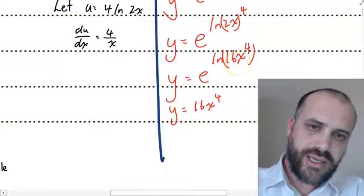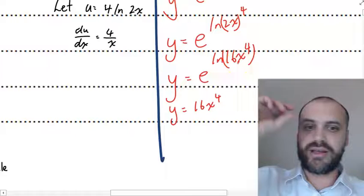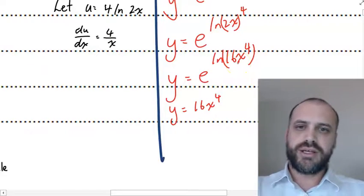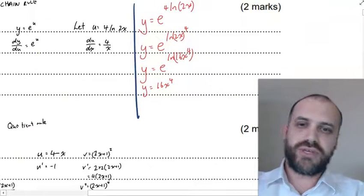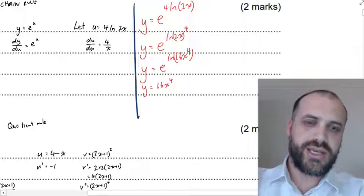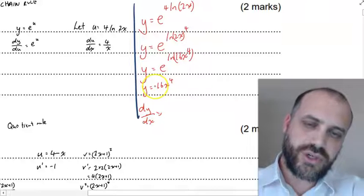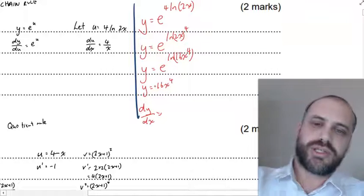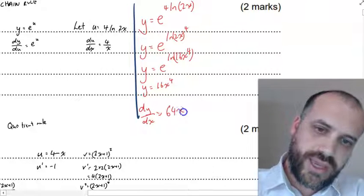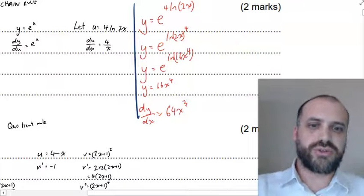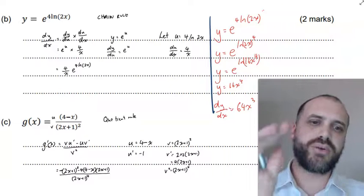Whatever you've got in that ln comes down and that e and that ln disappear. So I haven't even started deriving yet. y equals 16x to the 4. So dy dx is equal to 4 times 16, which is 64x to the 3.